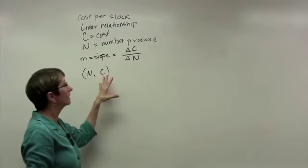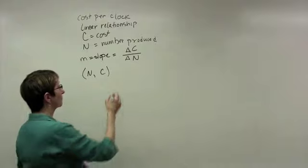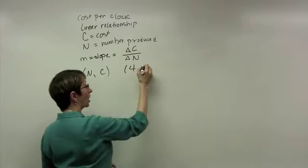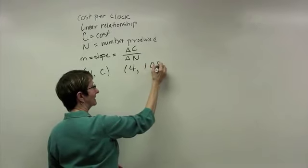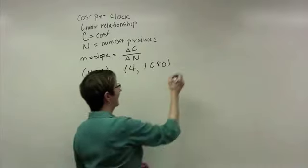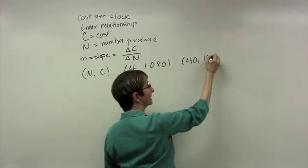So my pairs have to be set up as n first and then c. So I was told that for 4 clocks, it was going to cost $1,080 to produce all 4, and for 40 clocks, it was going to cost $1,800.